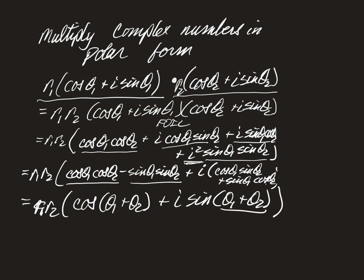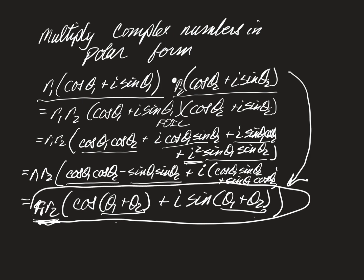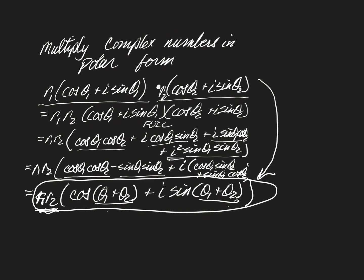We have the same angle, but now it's a sum. To multiply complex numbers in polar form, you just multiply the moduli and add the angles. It's much easier to multiply complex numbers this way. This was a proof of the result — you don't need to reproduce the proof, you just need to use this formula.